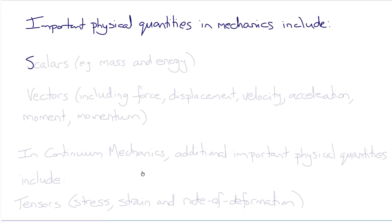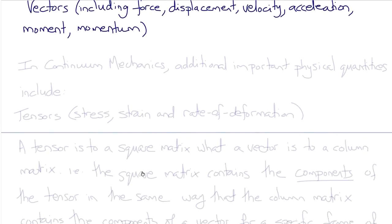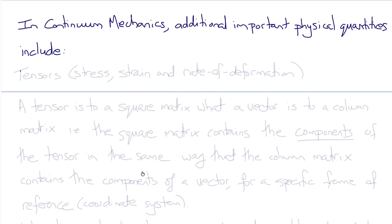Important quantities in mechanics include scalar quantities such as mass, energy, and density; and vector quantities including force, displacement, velocity, acceleration, moment, and momentum. These are the quantities we'll use in statics and dynamics. In continuum mechanics there are additional important physical quantities called tensors. A tensor is to a square matrix what a vector is to a column matrix. Properties that are tensors in mechanics include stress, strain, and rate of deformation, among others.